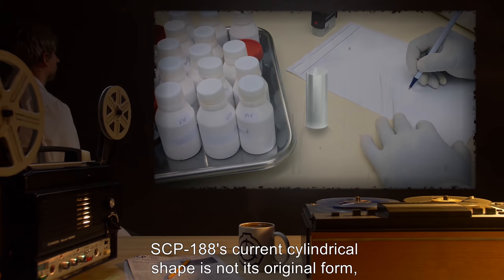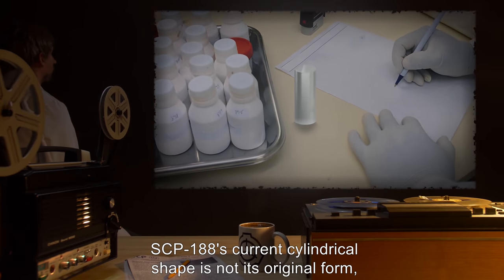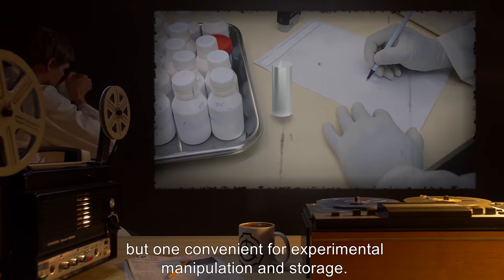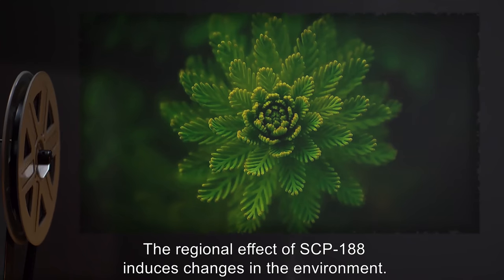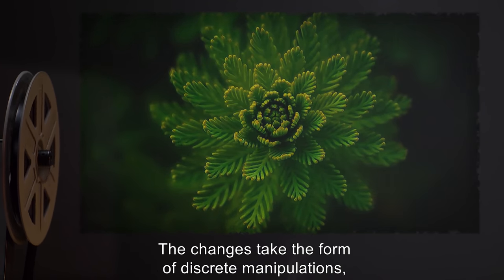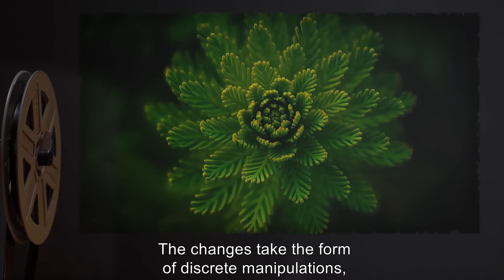SCP-188's current cylindrical shape is not its original form, but one convenient for experimental manipulation and storage. The regional effect of SCP-188 induces changes in the environment. The changes take the form of discrete manipulations.